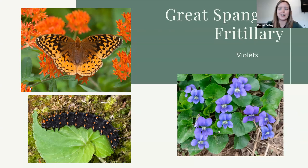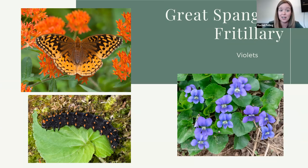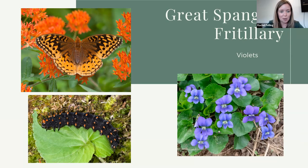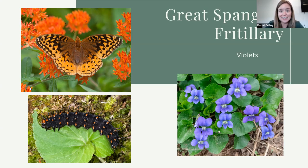The great spangled fritillary — what a beautiful, formal name. These guys are really pretty. Another one that sometimes kids confuse for a monarch. They are orange, and if you see them feeding on milkweed flowers — butterfly milkweed is a great nectar plant — but they're smaller than a monarch, about two inches across. They have a spiky little caterpillar, mostly black with orange spots on it. Their host plant is violets, and there are a few different species of violets that we find here in central Indiana natively, the common blue violet being the most common.